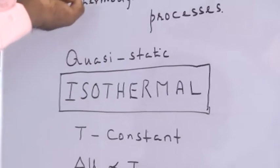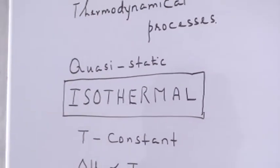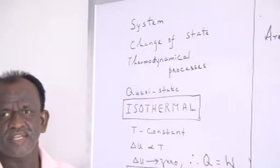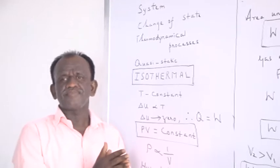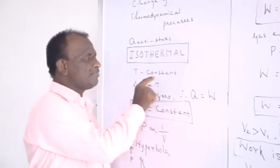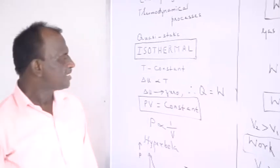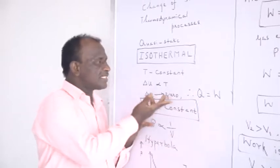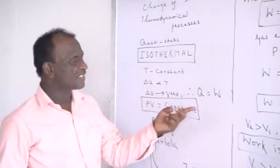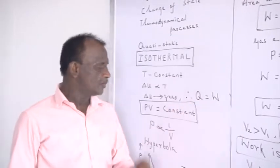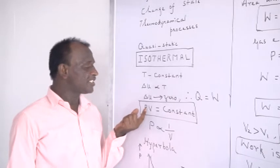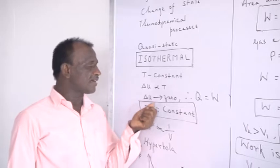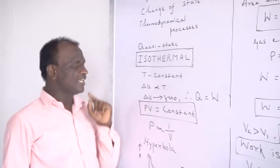The first thermodynamical process associated with the thermodynamical system is called an isothermal process. Here, the pressure and volume of a given mass of gas vary while the temperature is fixed as a constant. Since the change of internal energy depends upon temperature, there won't be any change because the temperature remains constant. Therefore, the first law of thermodynamics can be written as Q equal to W. From the ideal gas equation, PV equal to μRT, since T is constant, we can write PV as a constant. This equation represents the isothermal process.